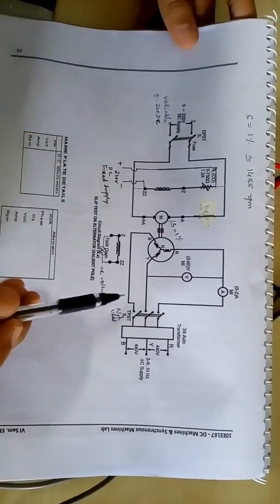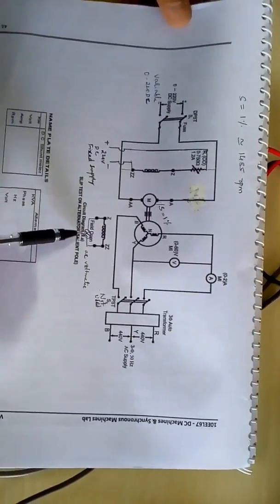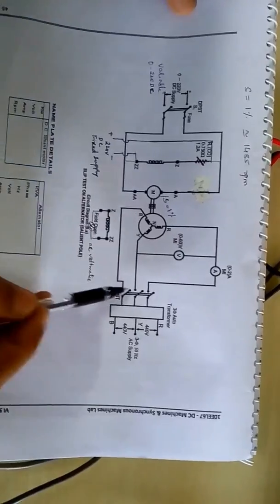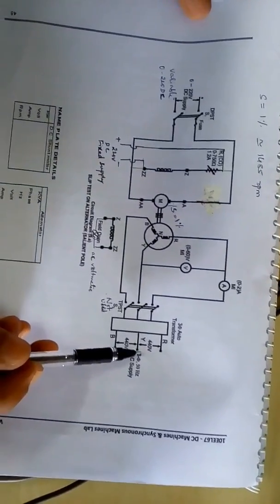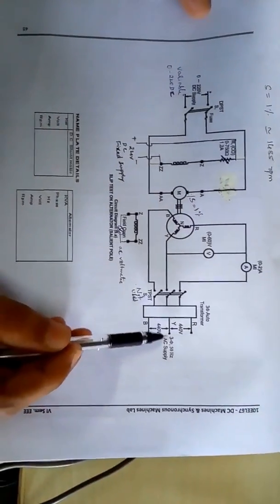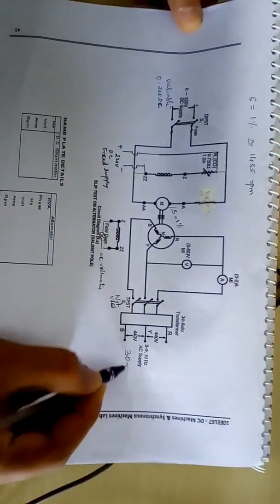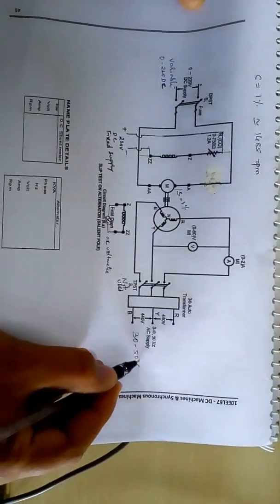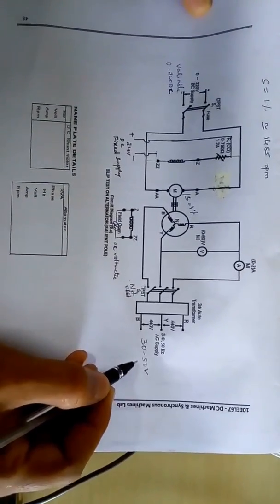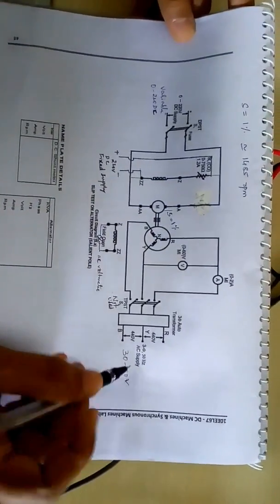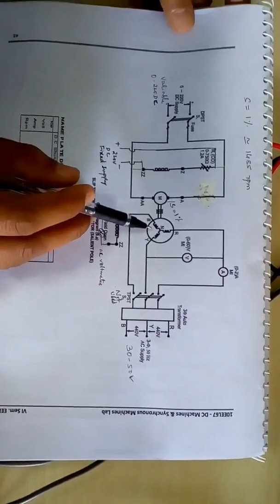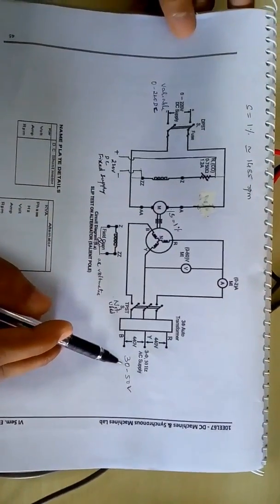Once you make sure that this reading is less than 12 volts, you give the stator supply through auto transformer around 30 to 50 volts. It should not be rated voltage.